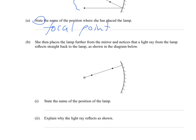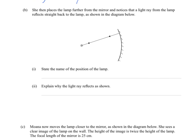She then places the lamp further from the mirror and notices that a light ray from the lamp reflects straight back to the lamp as shown in the diagram below. State the name of the position of the lamp. This time we are at twice the focal point which is equal to the radius. So we would call that the radial distance or the center of curvature. That's probably a better way. Center of curvature for the mirror.